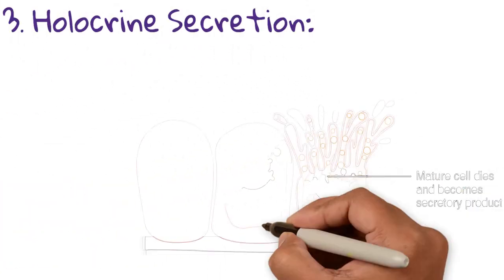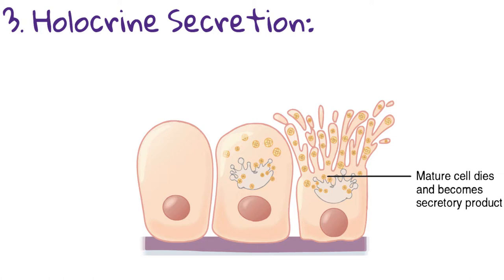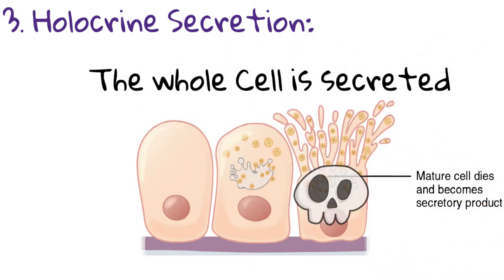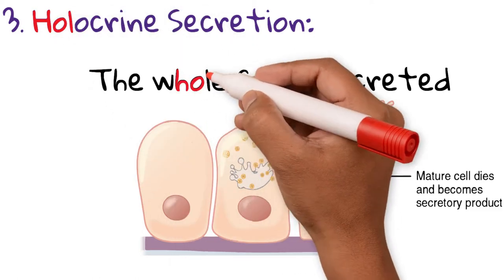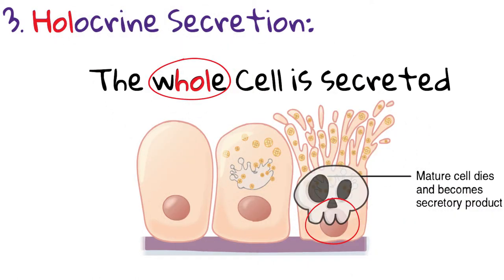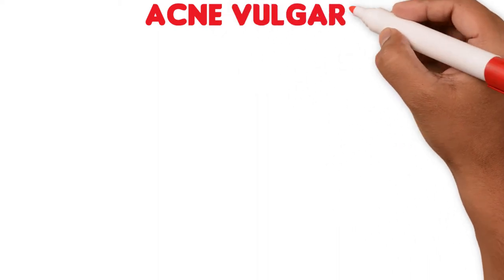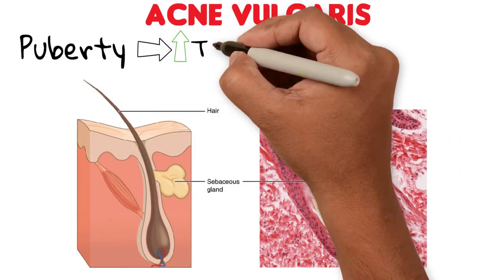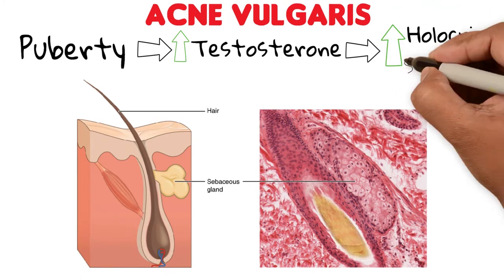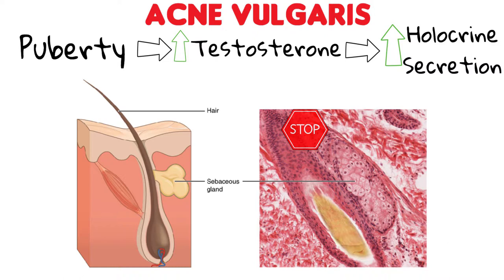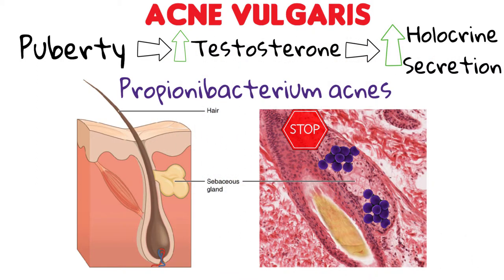Holocrine secretion is where cells accumulate product and enlarge until the cell explodes, releasing the product as well as the whole cell. To remember this, use HOL from Holocrine — it secretes the whole cell. Sebaceous glands are an example of holocrine secretion and are the primary structure involved in acne vulgaris. During puberty, increased testosterone leads to excessive holocrine secretion of sebaceous glands, causing blockage in gland ducts. This blockage leads to proliferation of Propionibacterium acnes, producing localized inflammation known as acne.